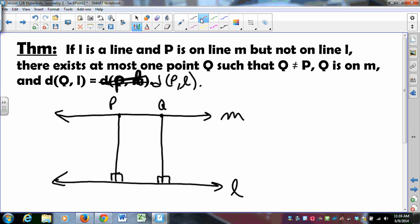So when we try to show at most one, we try to show that there cannot be two. And since there cannot be two, we pretend that there can be two. This is Q1, this will be Q2. Let's pretend that the distance from P to the line is the same as the distance from Q1 to the line is the same as the distance from Q2 to the line. And let's see what could possibly go wrong.